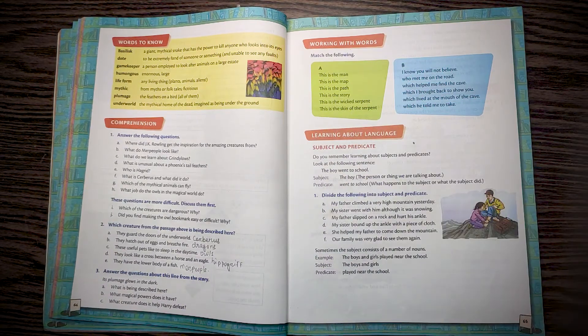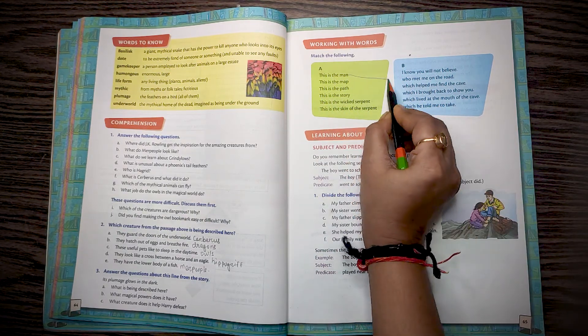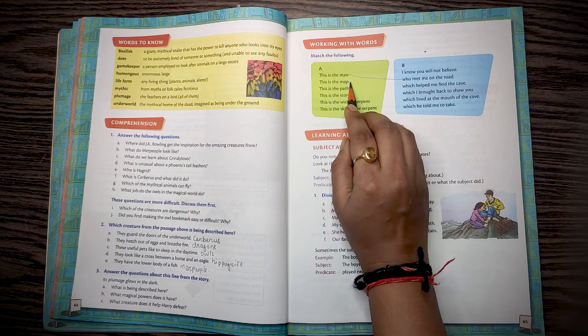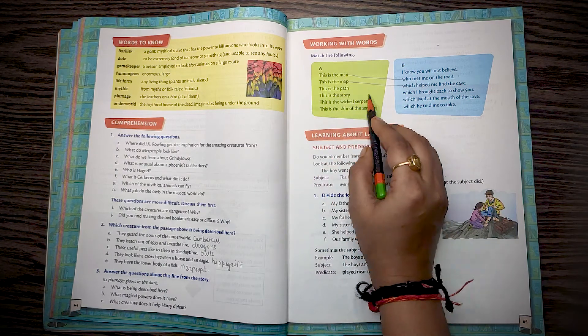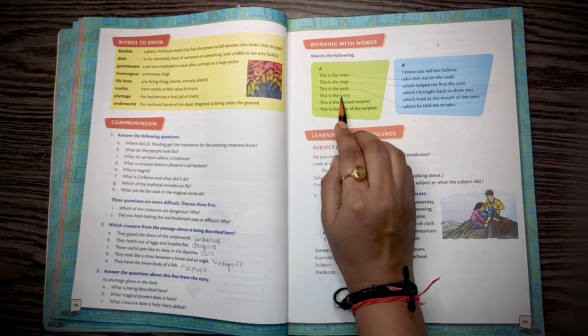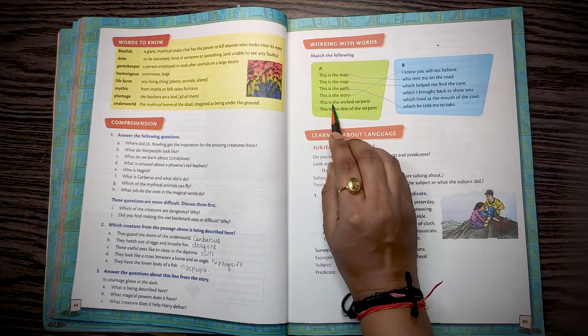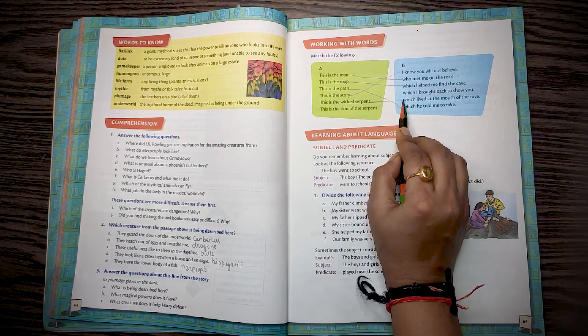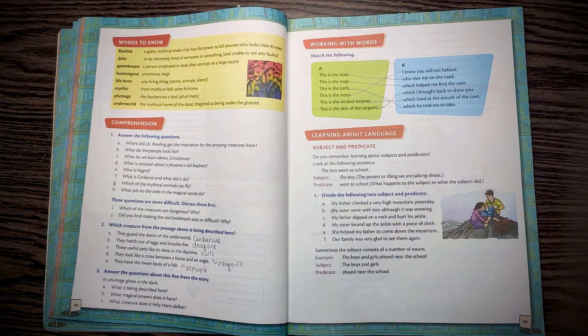Working with words. Match the following. This is the man who met me on the road. This is the map which helped me to find the cave. This is the path which he helped me to take. This is the story I know you will not believe. This is the white serpent which lived at the mouth of the cave. This is the skin of the serpent which I brought back to show you.